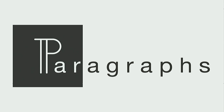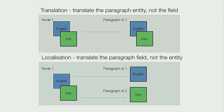Who here has used paragraphs in Drupal 8? Paragraphs is where translation gets messy. With entity translation, when you translate something from English to Irish or French, you have the same node ID and just different views on the node - just the fields are translated. That's not just for nodes, it's for entities. Paragraphs are entities in their own right.